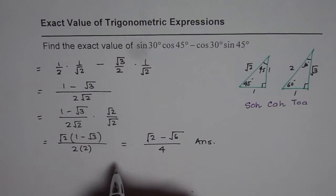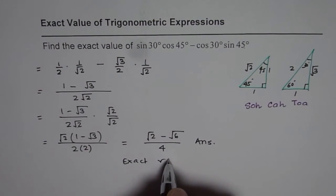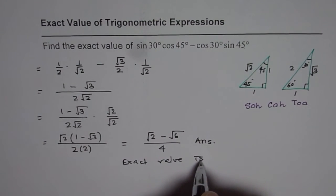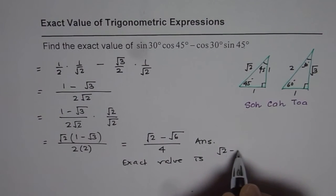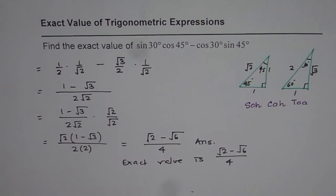So the exact value is square root 2 minus square root 6 divided by 4. I hope that helps. Thank you.